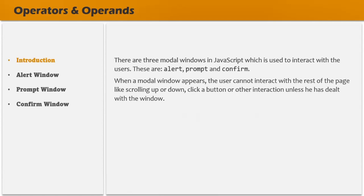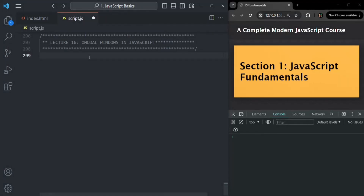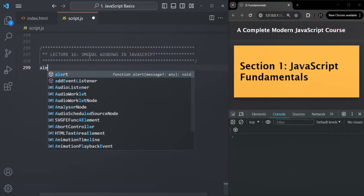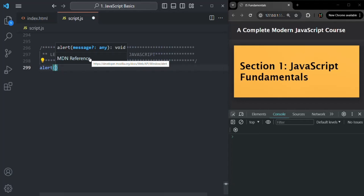Let's start with the alert modal window. The alert modal window is used to show a message to the user. You can show the alert window using the alert function in JavaScript, and the message you want to display is passed as an argument to the alert function. To show an alert window, we use the alert function and pass the message as an argument.